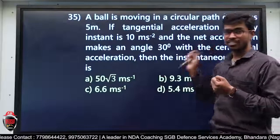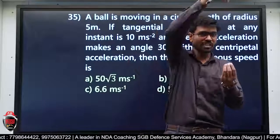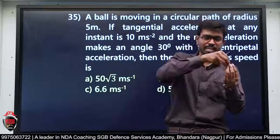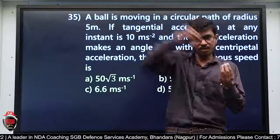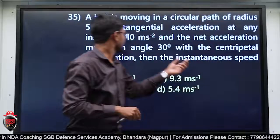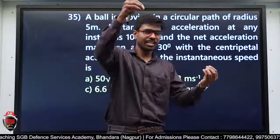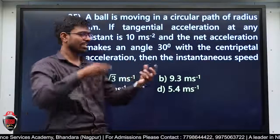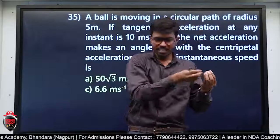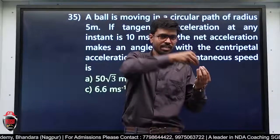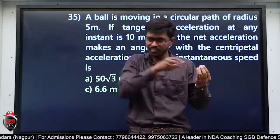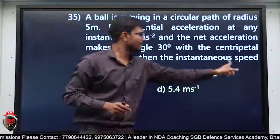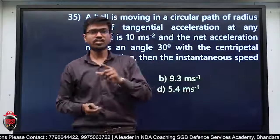Tangential acceleration इधर होता है, centripetal acceleration इस तरफ — तो net मतलब इन दोनों का resultant, वो बीच में रहेगा। Net acceleration is making angle 30 degree with centripetal acceleration — यह दिया हुआ है। Instantaneous speed निकालनी है — centripetal acceleration का V²/R formula है, तो वो V मुझे निकालना है।